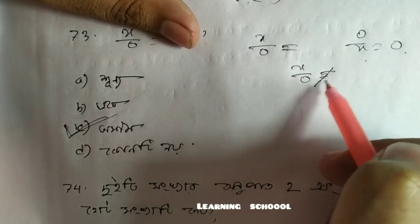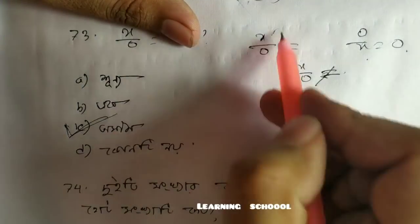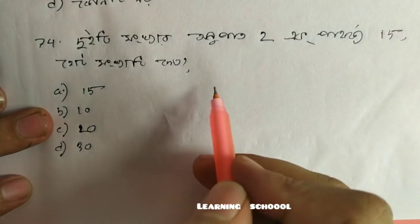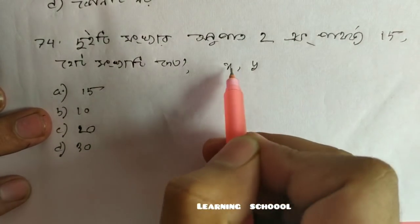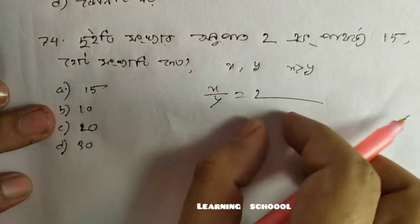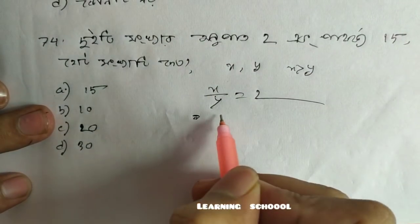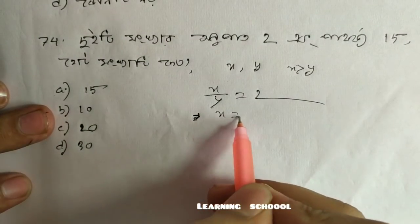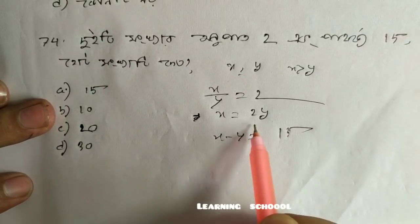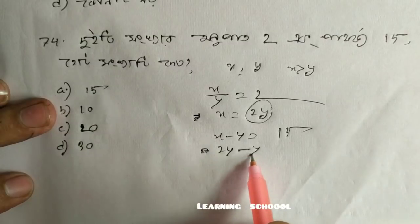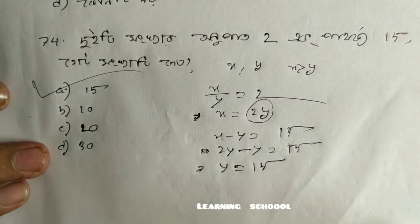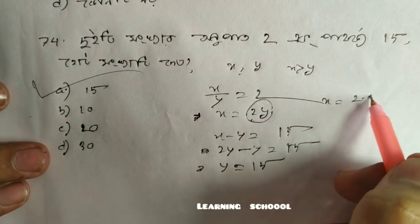xy0 is equal to 0. This is the value of x by 0. This value of y is equal to 0.